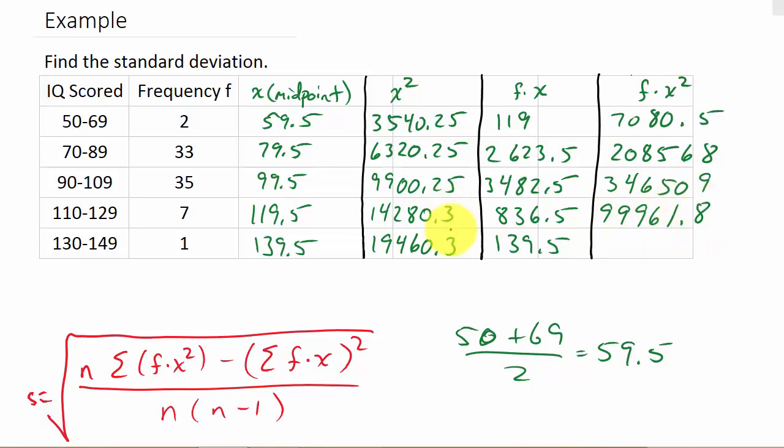And I know that these are .3s. They should be .25s. I just noticed that. I got these numbers in Excel so I could go through them quicker. And it looks like Excel rounded them to one decimal place. But that's fine. As long as we're understanding the method. And then I've got this number times this number, which that's going to be 19460.3.